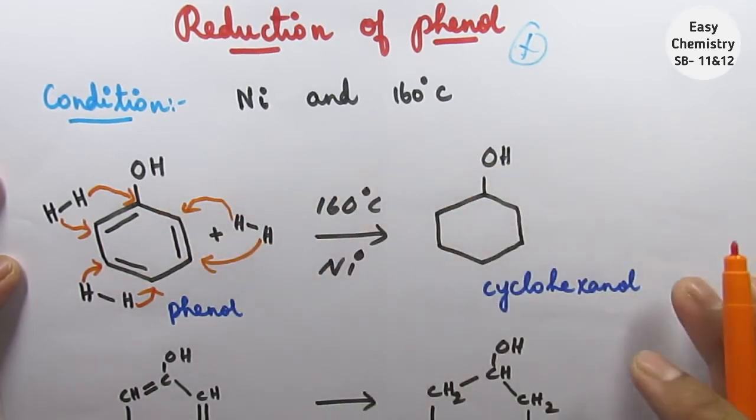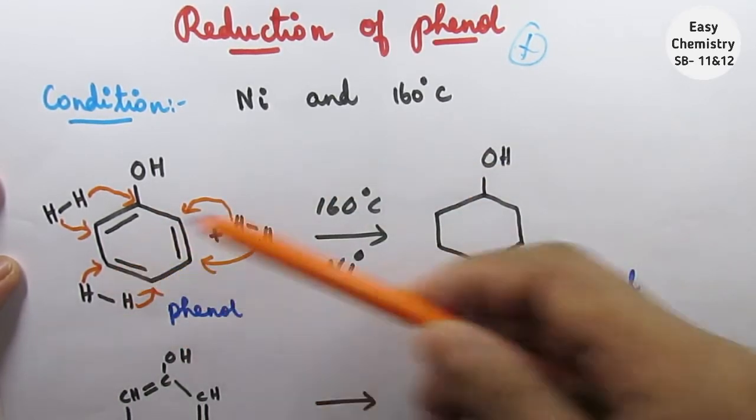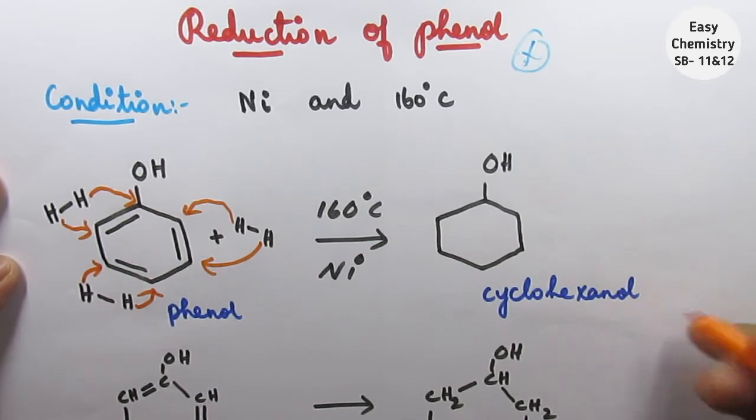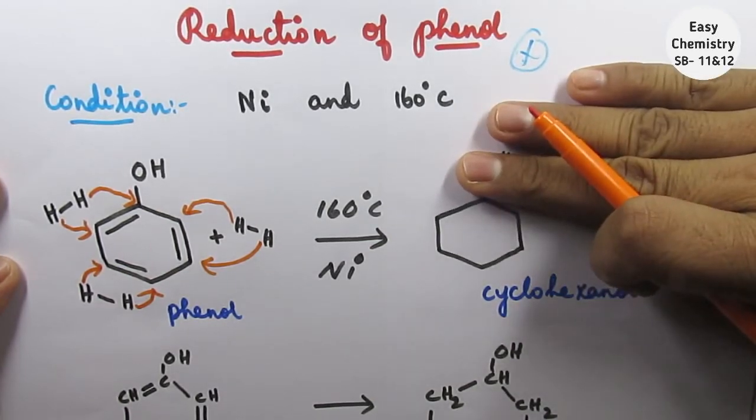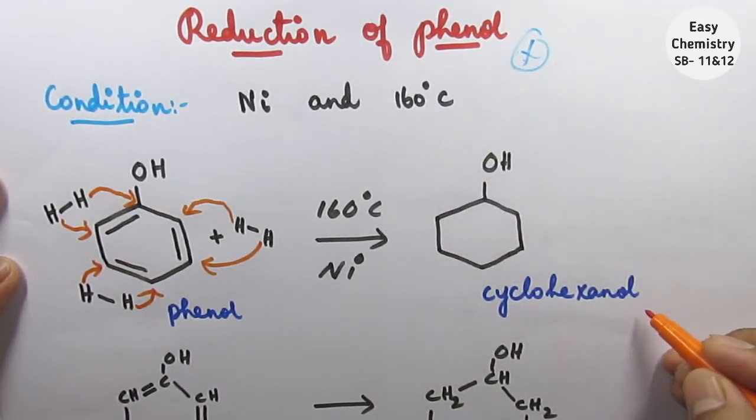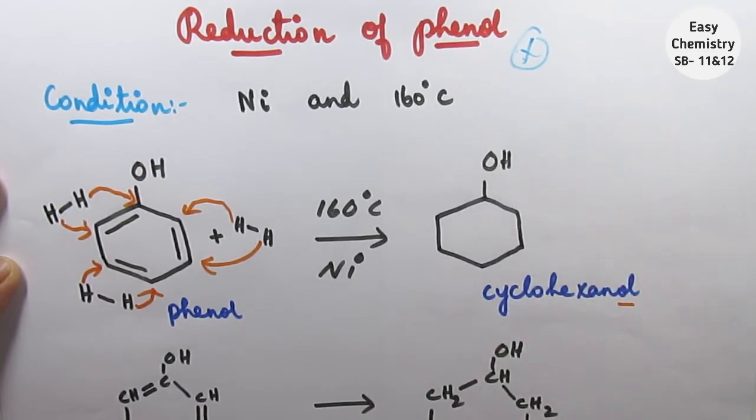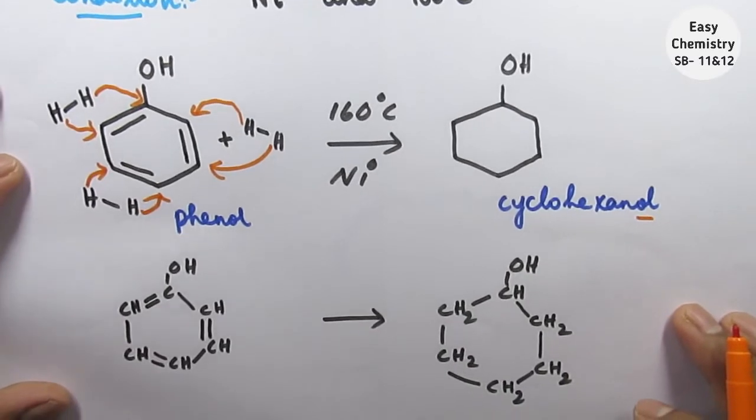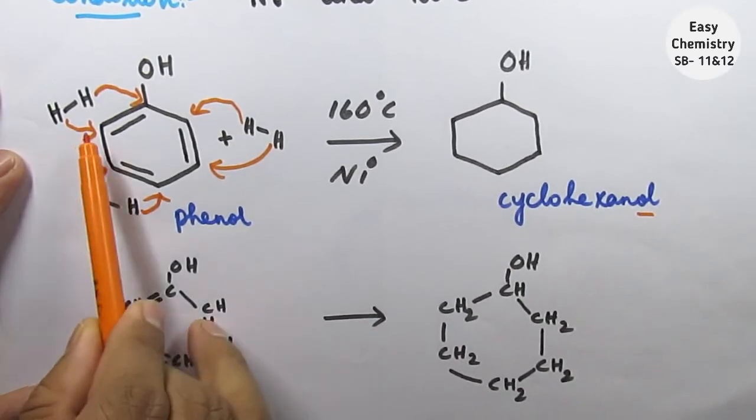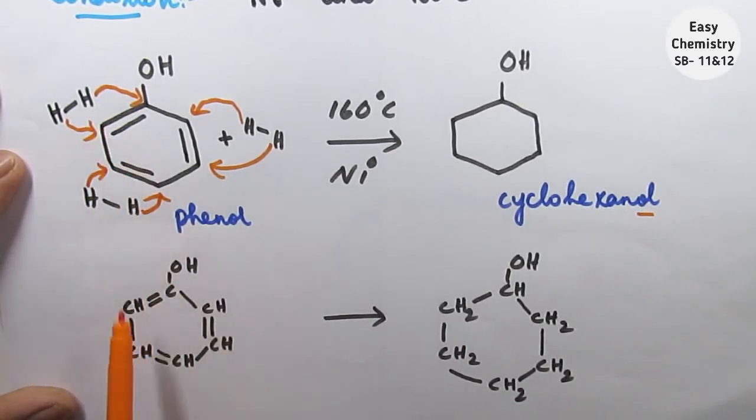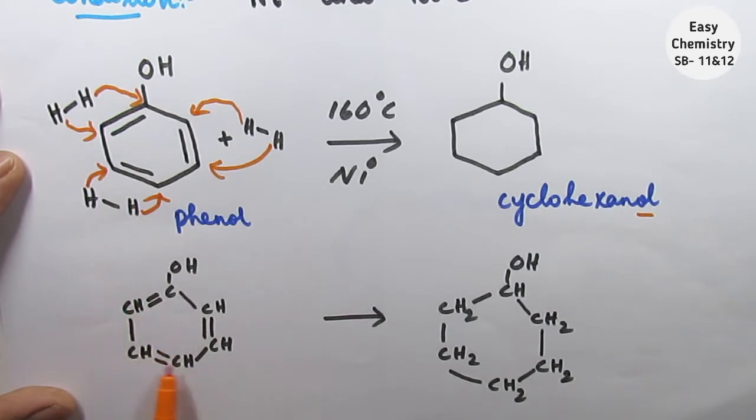So that is with one hydrogen and one hydrogen added at each position. This is what we are looking at - the phenol becomes cyclohexanol.